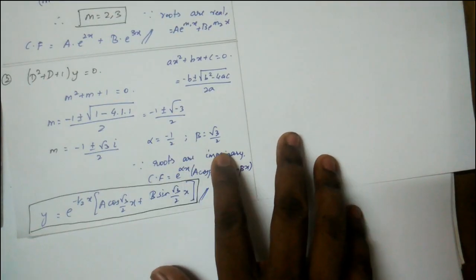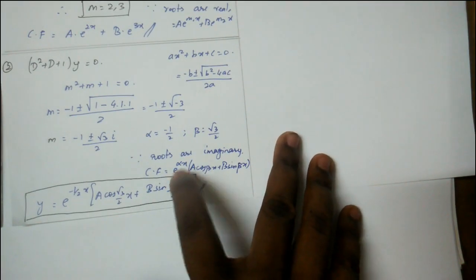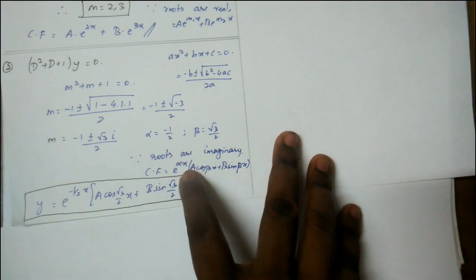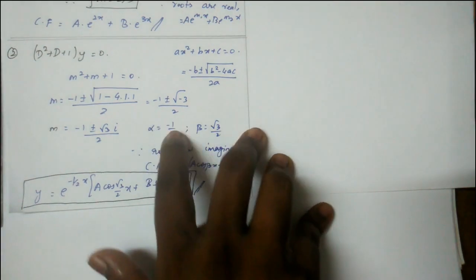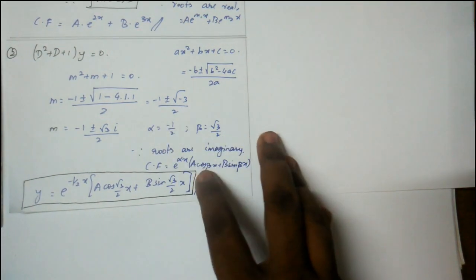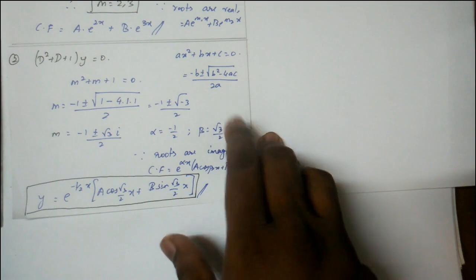If the roots are imaginary, the formula is e^(αx)(A cos βx + B sin βx). Substitute alpha = -1/2 and beta = √3/2.